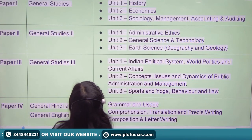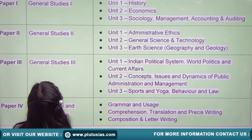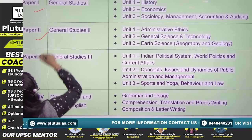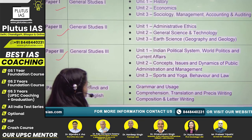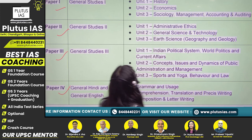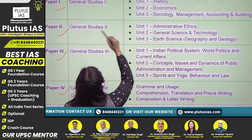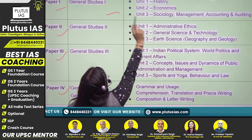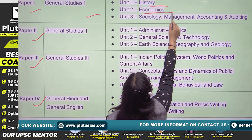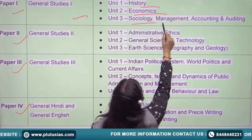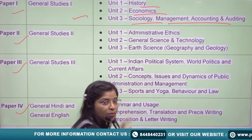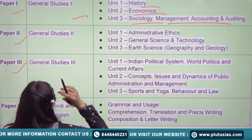Now let's talk about mains exam. Mains mein aapko bataya tha Paper 1, Paper 2, Paper 3, aur Paper 4 — jo aapka GS hai, 4 parts mein divide hoga. Paper 1 mein jo aapka General Study Paper 1 hoga, aapka history se question aayega, economics se, sociology se, management, accounting and auditing se bhi aapka question banhenge.